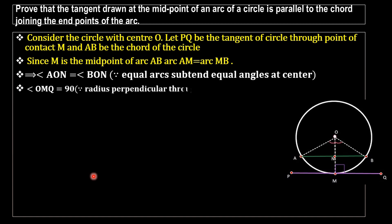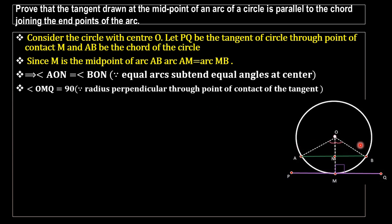Angle OMQ equals 90 degrees, since the radius is perpendicular to the point of contact of the tangent — that is, OM is perpendicular to PQ. So this angle is 90 degrees. We now have all this information and need to prove angle ANO equals 90 degrees using it.